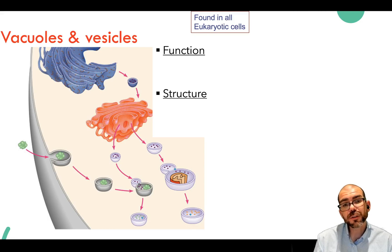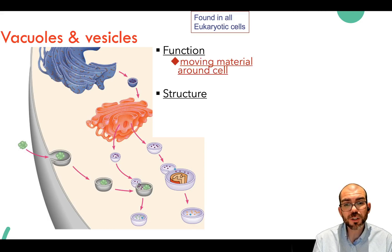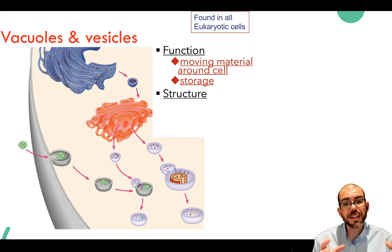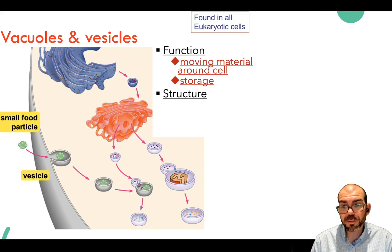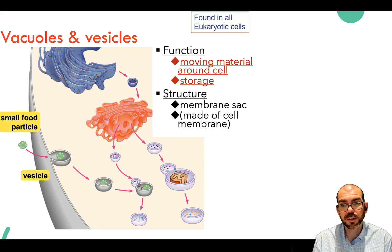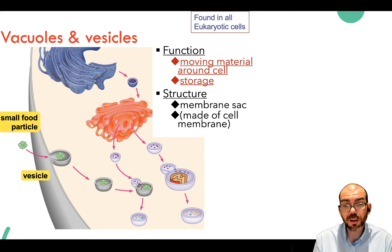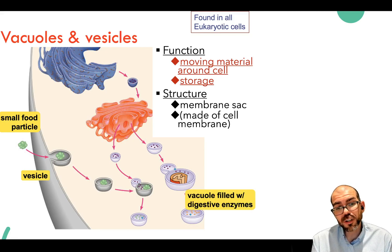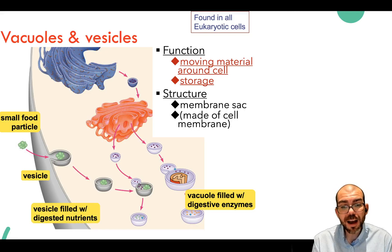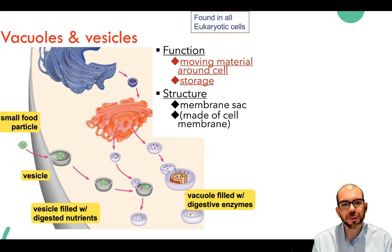Vacuoles and vesicles are found only in eukaryotic cells. Their primary function is moving material around in the cell and storing it. A vacuole is used for storage—keeping things contained to be used later—while vesicles move substances around. Both are made up of cell membrane. A substance is taken into a little bit of cell membrane, which forms around it and moves it. They can be filled with digestive enzymes, nutrients, or broken-down organelle material that gets packaged, dissolved, and recycled to build new organelles.